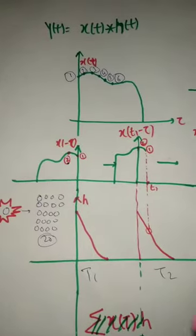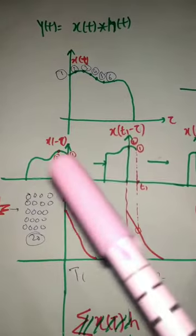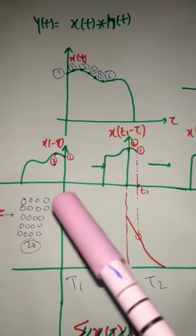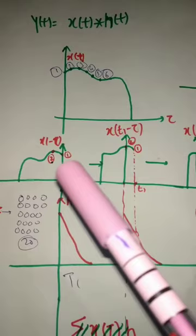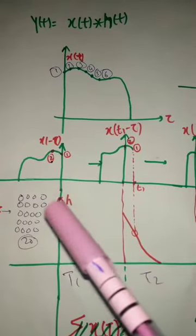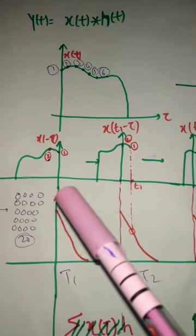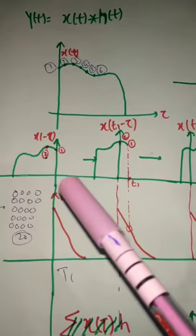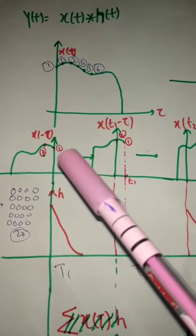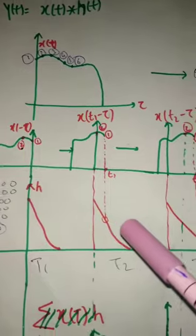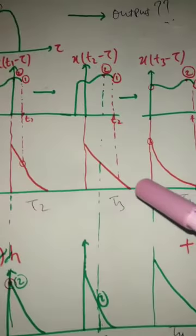And just behind x1 there is x2. So after flipping the signal, we could see that the two follows the one. So as time progresses, the response of one is going to be decaying.